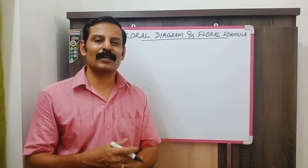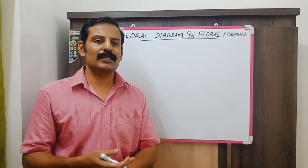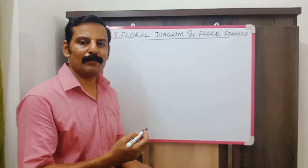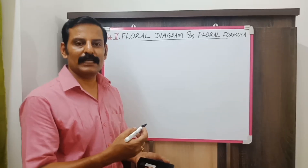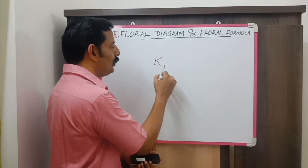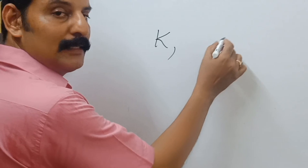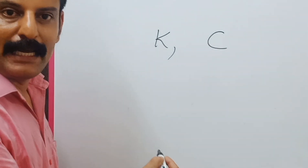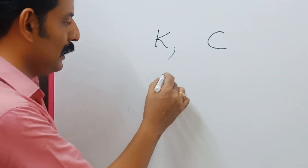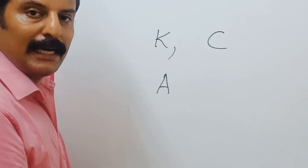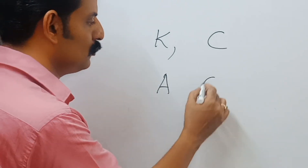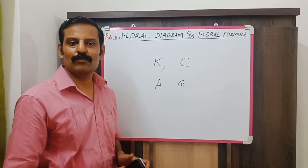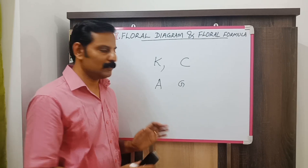Next, you have to represent the other floral organs like calyx and corolla. Calyx is represented by the letter K, corolla by C, then comes the androecium represented by A, and gynoecium by G. These are the letters used for representing different floral organs.